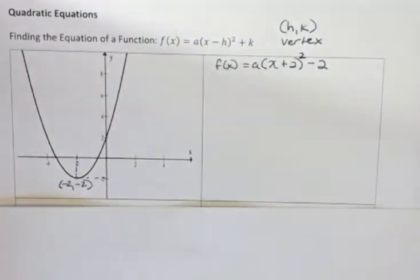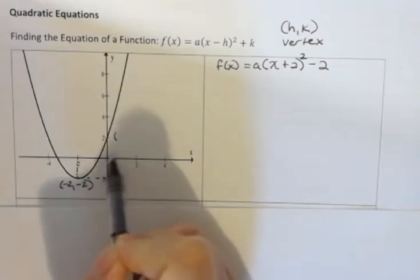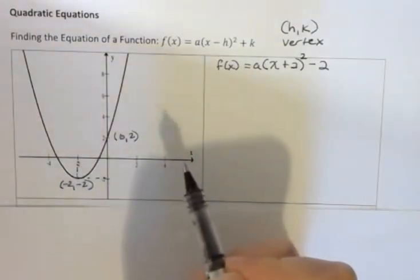For some of you where you're doing a matching, that's enough to match probably. But what about this a? I also have another point that's very obvious here. I have the point 0, 2, which is the y-intercept.